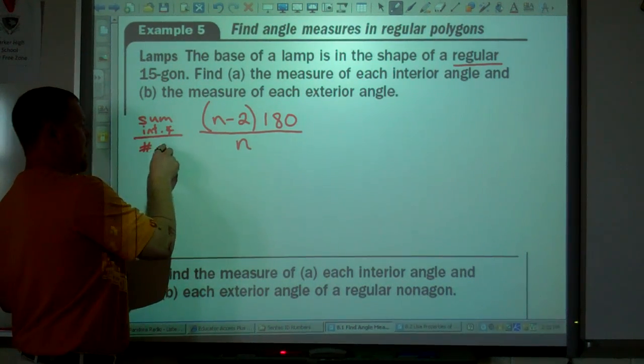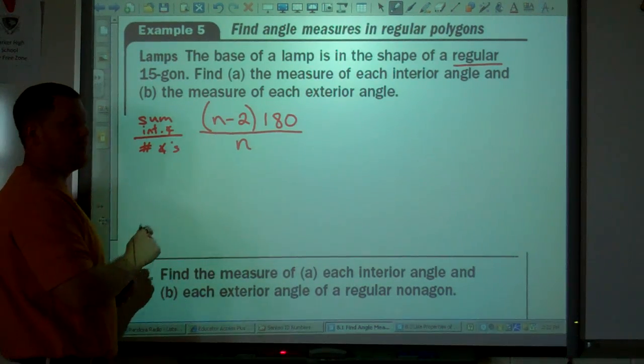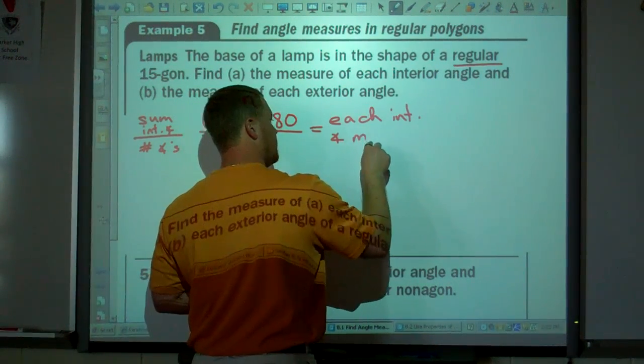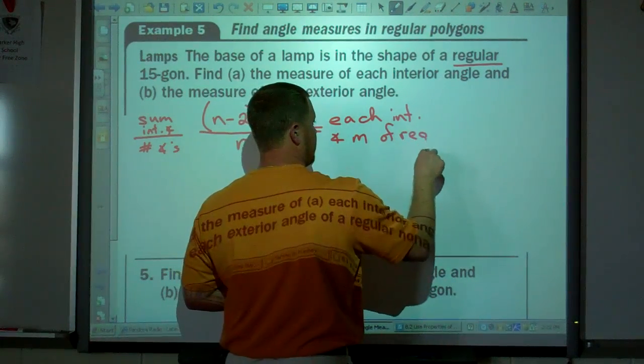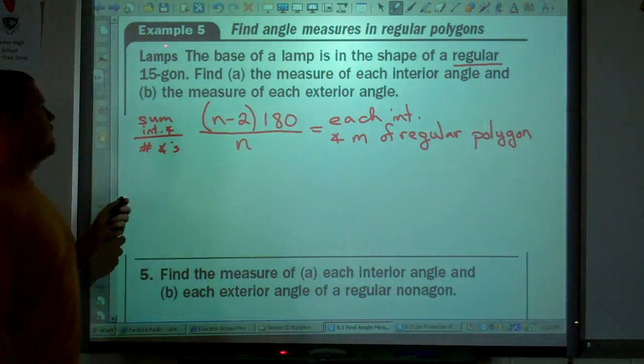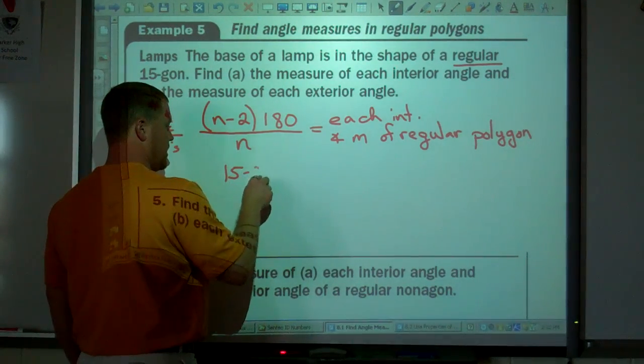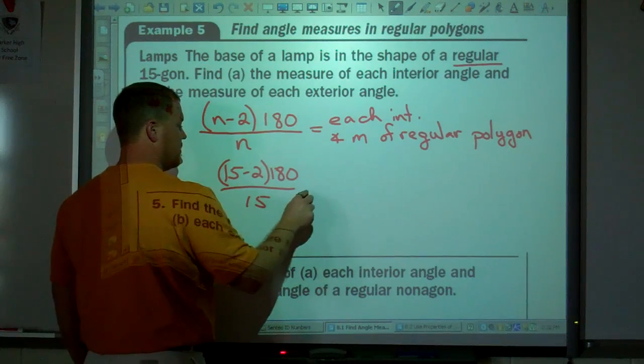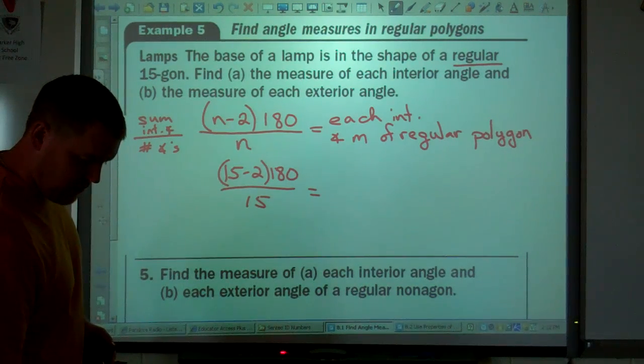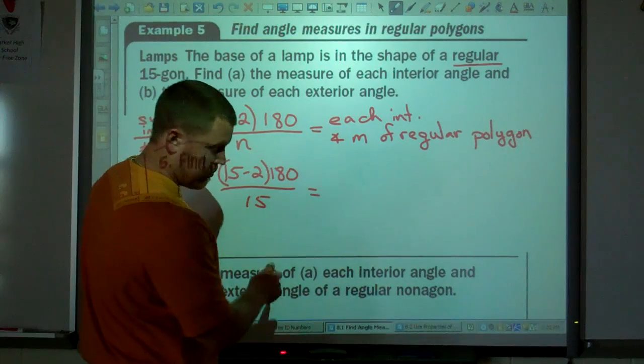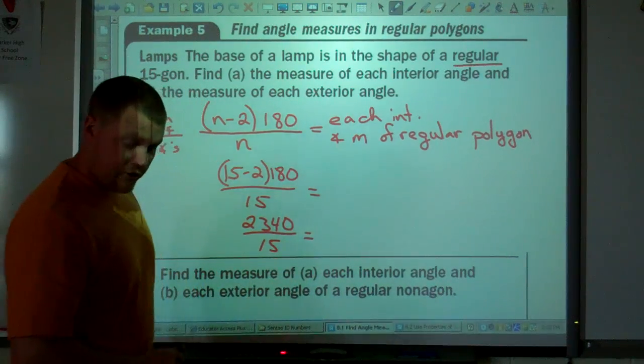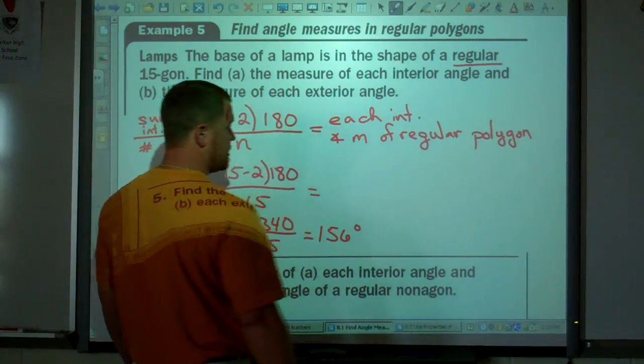That's the sum of the interior angle measures. So if we take and divide by the number of angles, we will get each interior angle measure of a regular polygon. So in this case, we have a 15-gon. So you take 15 minus 2 times 180 divided by 15, which equals, so 13 times 180 is 2340 divided by 15. 2340 divided by 15 equals 156 degrees. That's our interior angle measure.